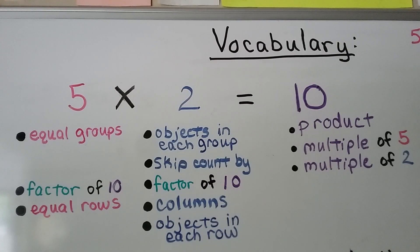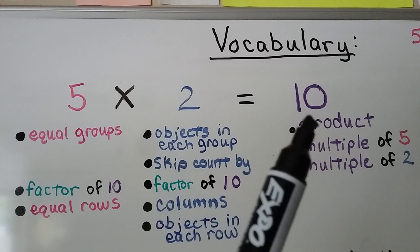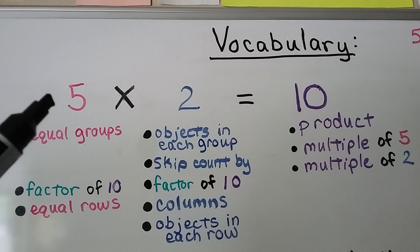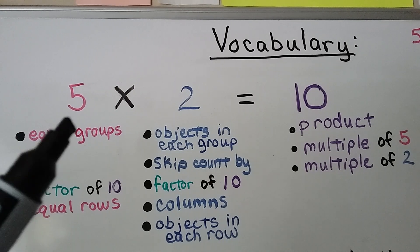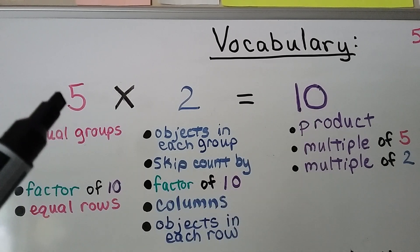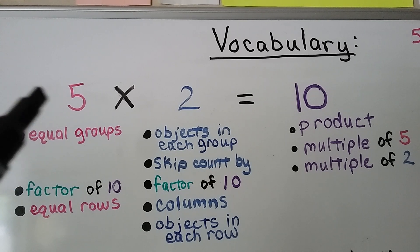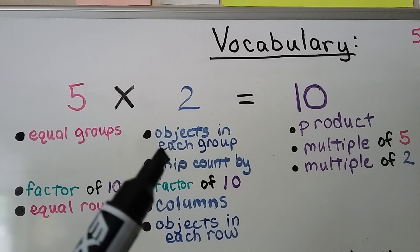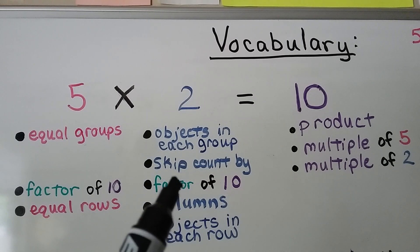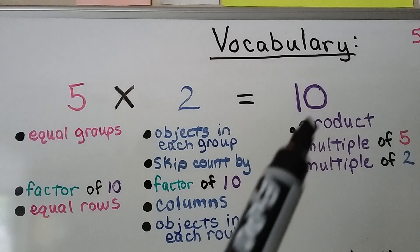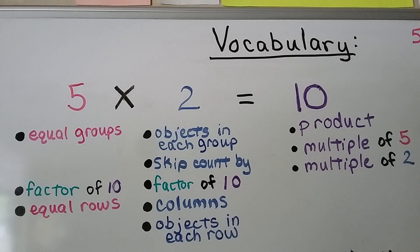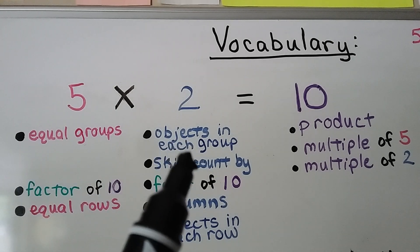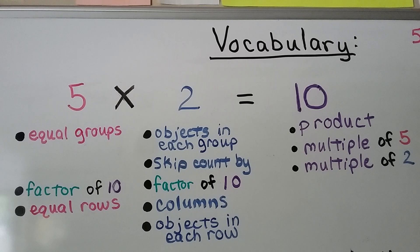As a reminder from the beginning of chapter 3: 5 times 2 is equal to 10. The 5 is the number of equal groups — it's also a factor of 10 and tells us how many equal rows there are. The 2 is the number of objects in each group, what we skip count by, and it's also a factor of 10, the product. This represents the columns and how many objects are in each row.